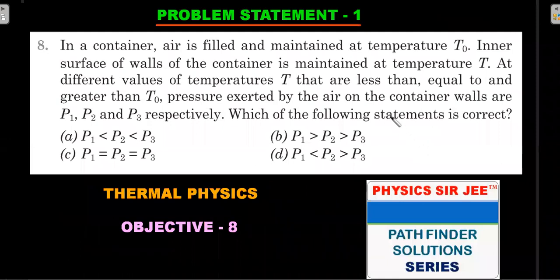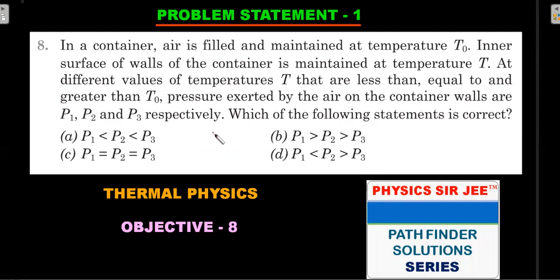Problem statement one: In a container, air is filled and maintained at temperature T₀. The inner surfaces of the container walls are maintained at temperature T. At different values of wall temperature T — less than, equal to, or greater than the gas temperature T₀ — the pressures exerted by the air on the container walls are P1, P2, and P3 respectively. This asks for the relation between these pressures. This was a previous Olympiad problem.